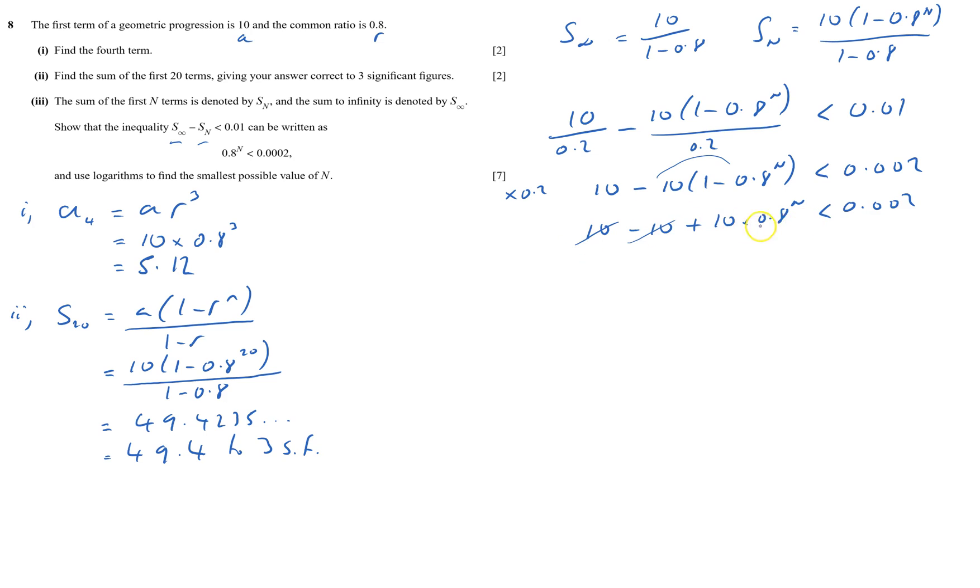I've got 10 times this, I don't want 10 times it, and don't forget I can't just do 10 times 0.8 because it's not 10 to the power of n. So I'm going to divide both sides by 10, and that'll give me 0.8 to the power of n is less than 0.002. And so I've shown it can be written like that, and now I've got to use logarithms to find the smallest possible value of n.